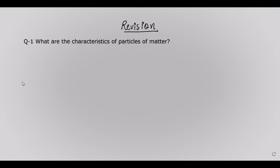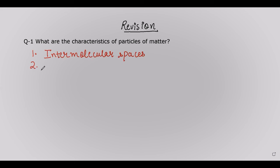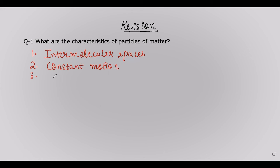The different characteristics of particles of matter: first, there is the presence of intermolecular spaces — spaces are present in between the particles of matter. The second characteristic is that particles of matter are in constant motion. They are constantly moving, either in their own places or different places. The third characteristic is that particles of matter are able to attract each other — there is a force of attraction between them.